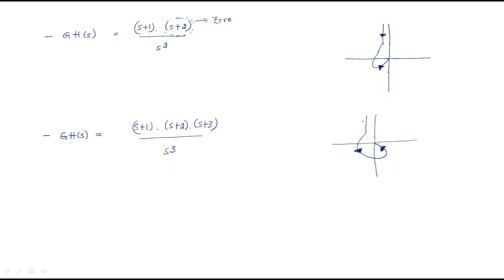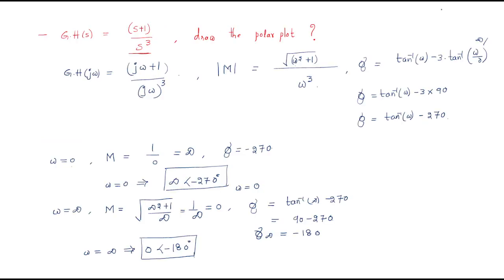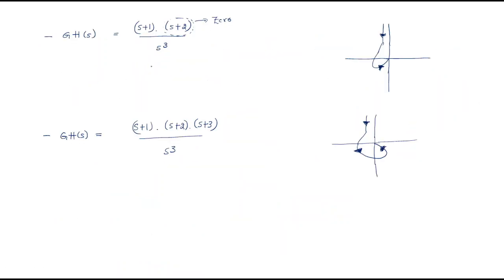This is the complete problem. Whenever extra zeros are added, the polar plot curve automatically shifts 90 degrees downward for each additional zero. I hope all of you understand this problem and this issue. Thank you.